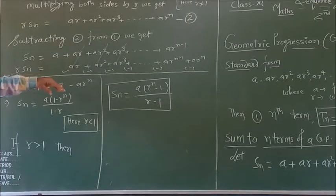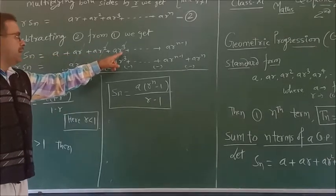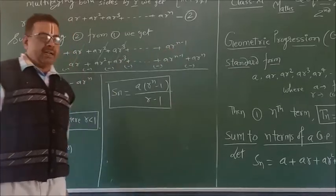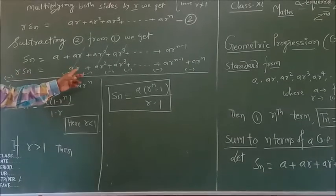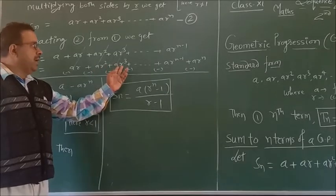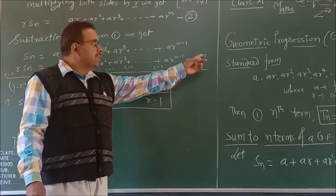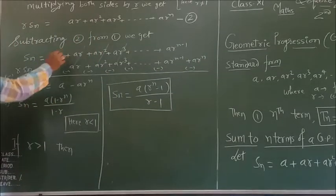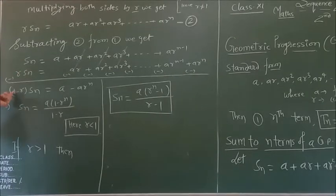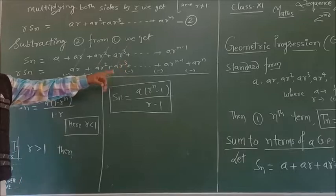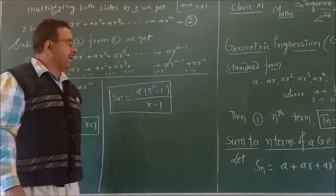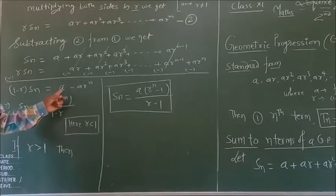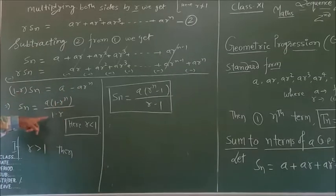Subtracting the second equation from the first, we get S_n(1 - r) = a - ar^n. Taking a as common, we get S_n = a(1 - r^n) / (1 - r). This formula is used when r < 1.